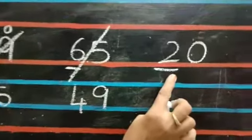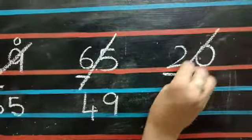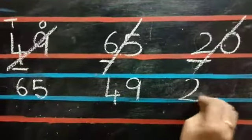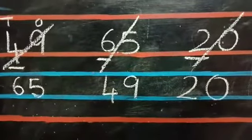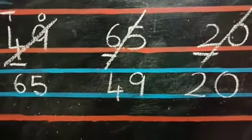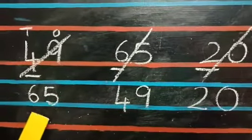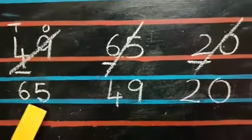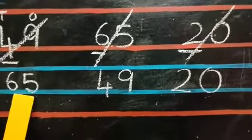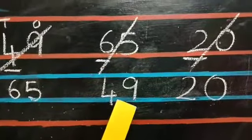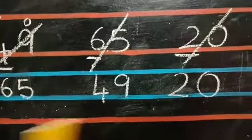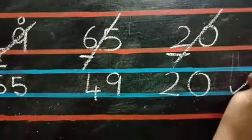And only one number is left, children. 20. Strike off 20 and copy the number. Now check the answer, children. Descending order means always first number should be big. 65 is bigger than 49 and 49 is bigger than 20. So the sum is correct.